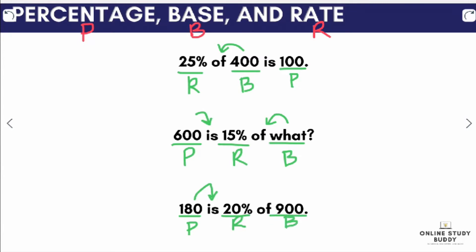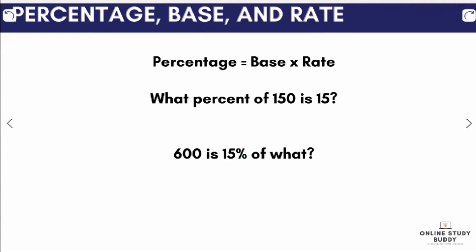So how exactly do we solve for the percentage, the base, and the rate? We simply follow this formula: the percentage is equal to the base times the rate. It is important to identify in the problem what is being asked so you know which variable is missing.